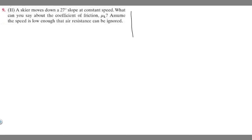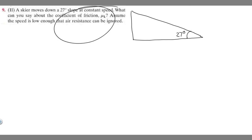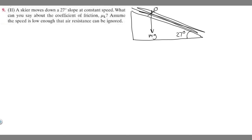Let's go ahead and draw what's going on here. We're going to have this slope with our skier on it. We know the angle of our slope is 27 degrees, and they're traveling at a constant speed. We want to treat the direction along the slope as the x-axis, and then perpendicular to that is going to be your y-axis. It's going to make it easier to solve.